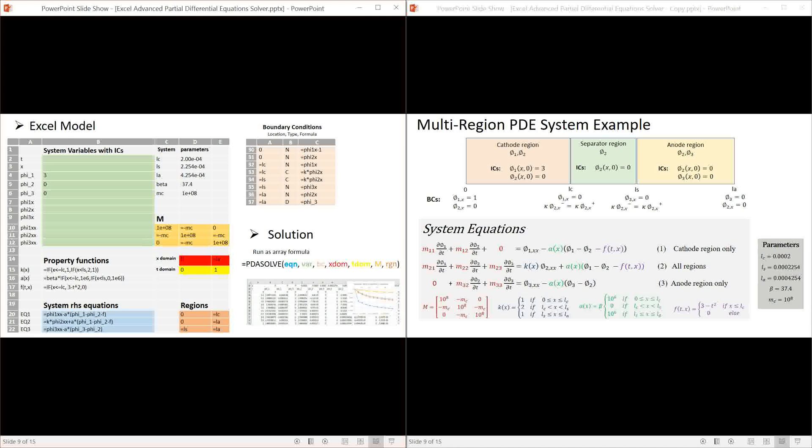The mass matrix M is defined in the yellow range. Before I can define the system equations I first need to define the functions A, F and K in cells B15, 16 and 17 using standard Excel F function. Now it's very easy to define the system right hand side equations in terms of my named variables and functions in the blue range B20 to B22.